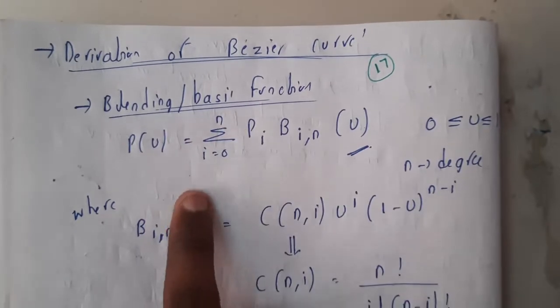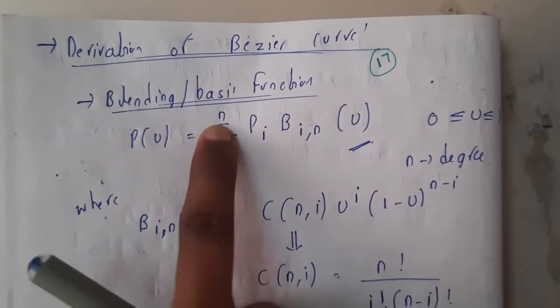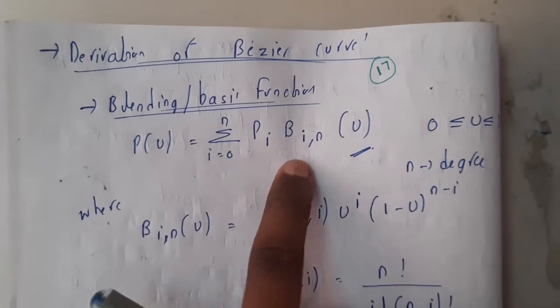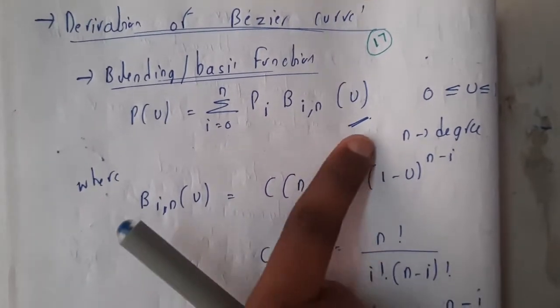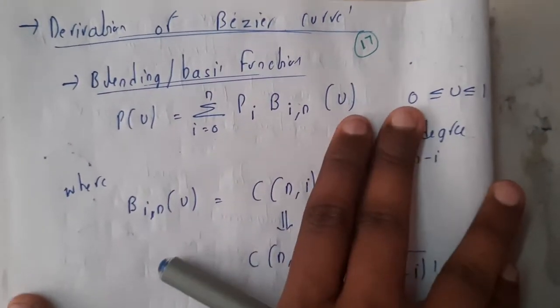It is nothing but P(u) equals sigma i equals zero to n, P_i B_{i,n}(u). Here the u value should always be ranging from zero to one. Please remember this because you'll be using this in our problems.